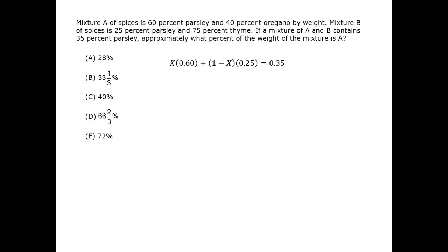We can get a sense now of how x and 1-x compare. Which one is pulling harder to give this result of 35%? 0.60 is 0.25 away from the final value, whereas 0.25 is only 0.10 away from the final value.